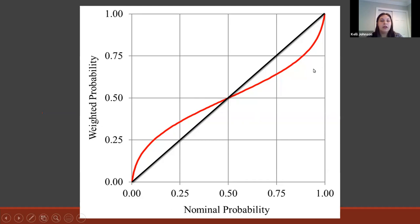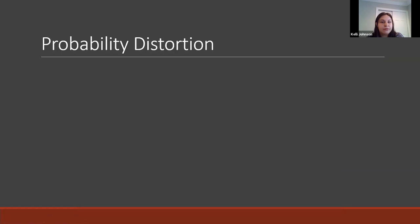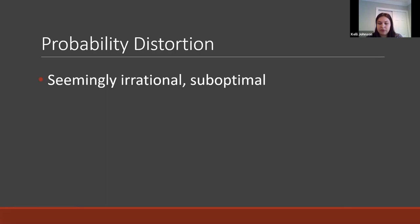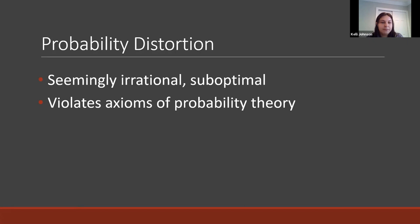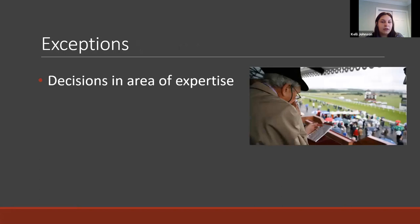The probability weighting function describes this — shown as the red line. If I told you the probability of something is 0.25, this function says you would treat it more like 0.3. The red line represents the weighted or subjective probability, and the x-axis is the probability that was stated. These weighted probabilities are regressive with respect to the nominal probability. This seems irrational or suboptimal — it violates axioms of probability theory and is inconsistent with expected utility theory.